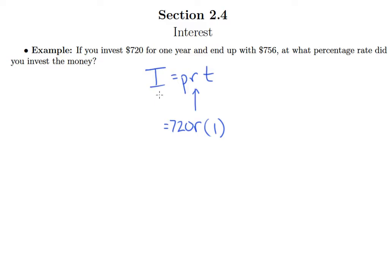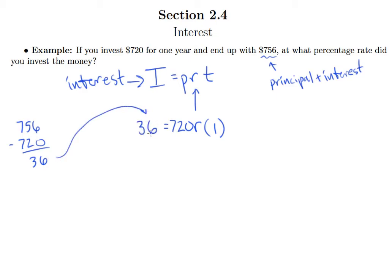Now be careful, it's really tempting to just take the last number that we haven't used yet and throw it in for I. But remember, this is the amount of interest. Is $756 the amount of interest? Well no, it's not, right? Because this is the principal plus interest, right? It's how much is actually in the account. So here, we don't want to put 756, we want to put the difference of 756 and 720 in that spot. So of course, we place 36 in as the amount of interest.